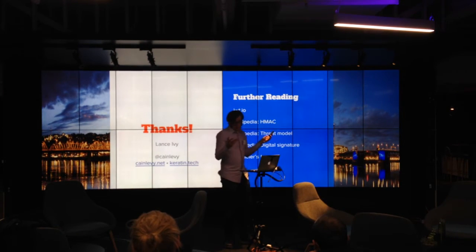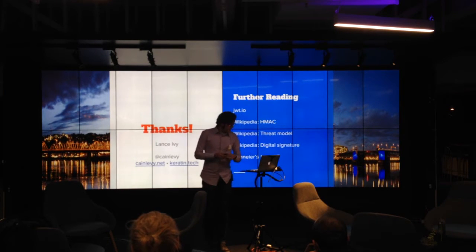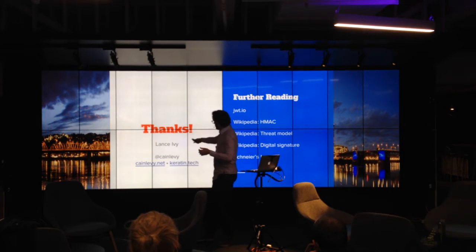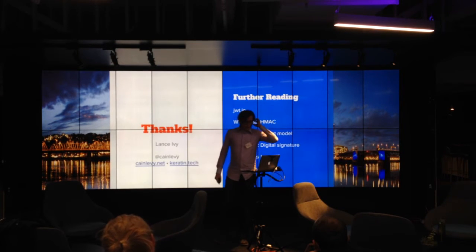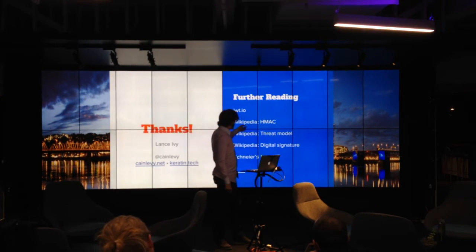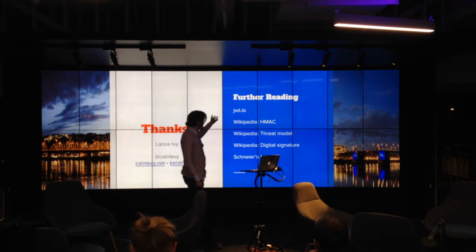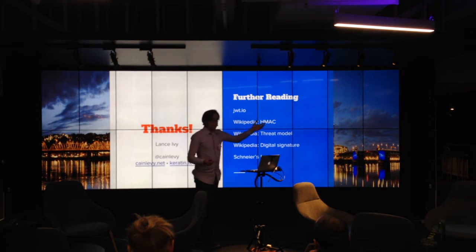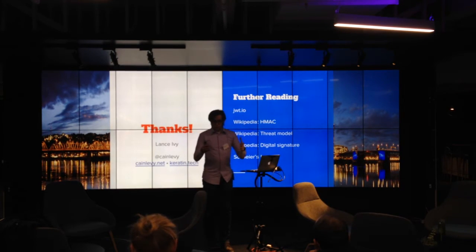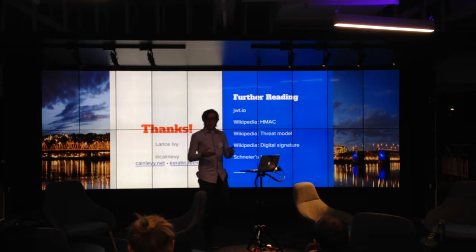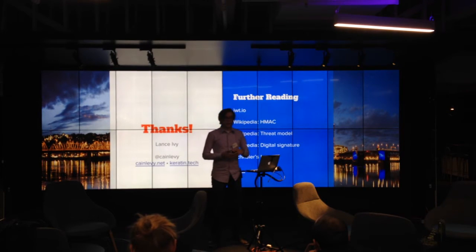If you do try any of these or have ideas or questions of your own, I'd love to hear them. I'm on the local Slack as Kane Levy. Here are some searches for things you might find interesting: JWT.io has a debugger; HMAC is the shared secret model; threat model is more ways to think about security; digital signature is the Wikipedia page on the public key signing process; and Schneier's Law is always good to keep in mind if you're designing security systems.